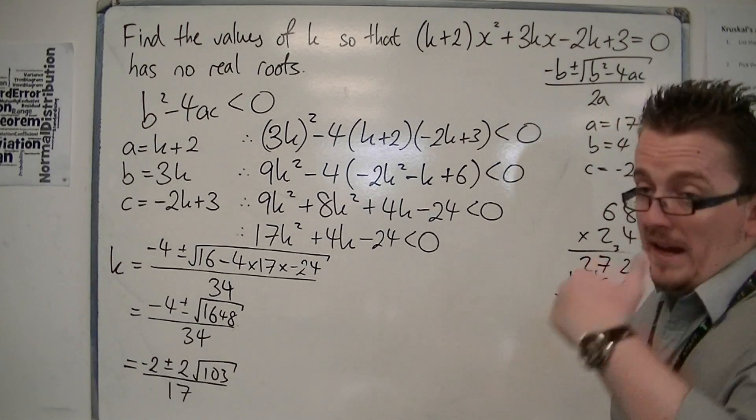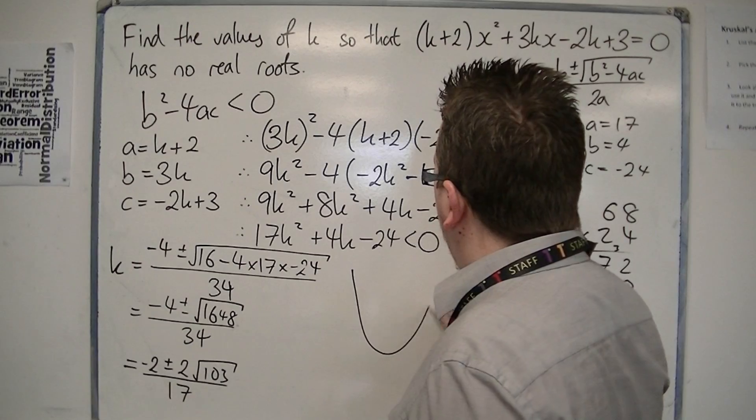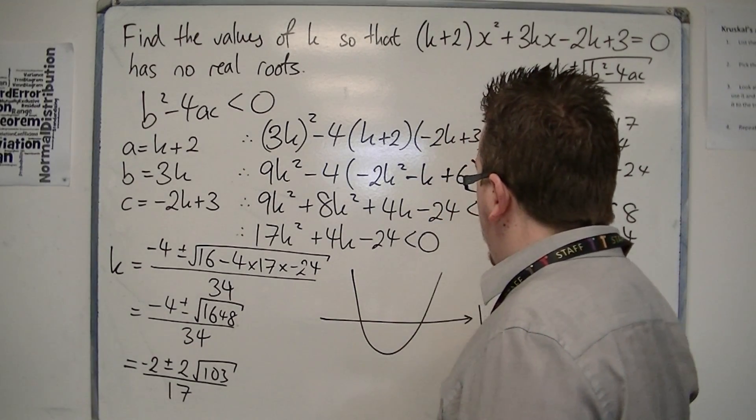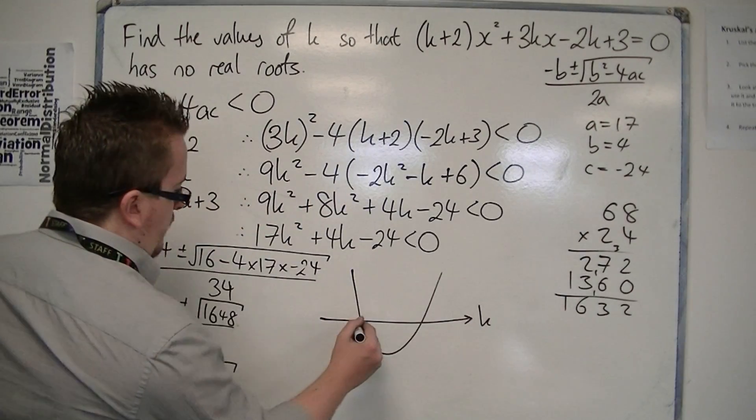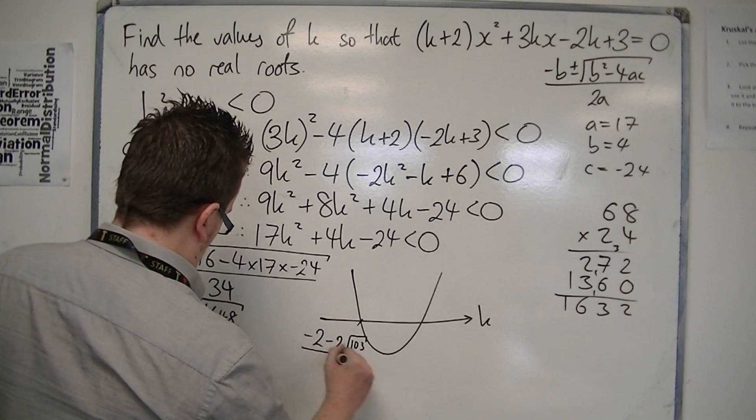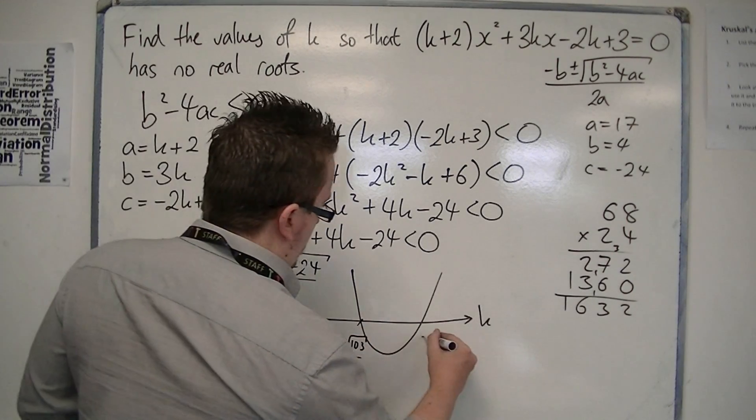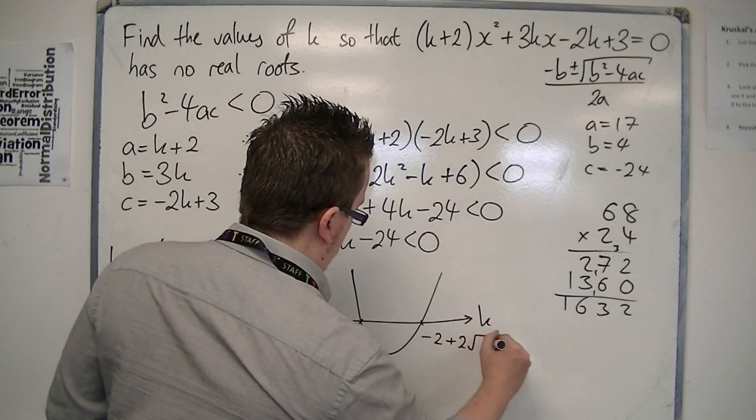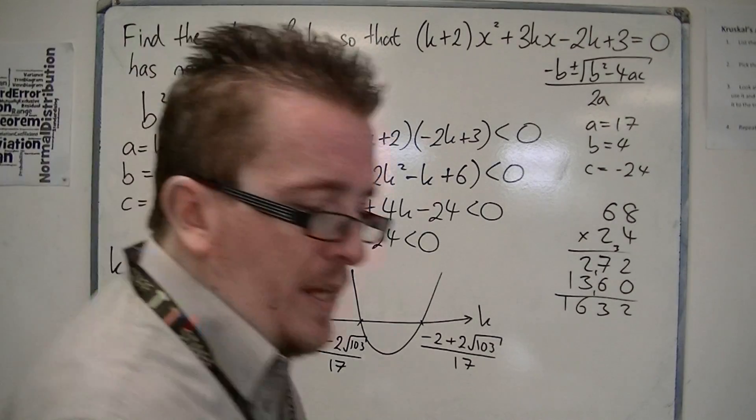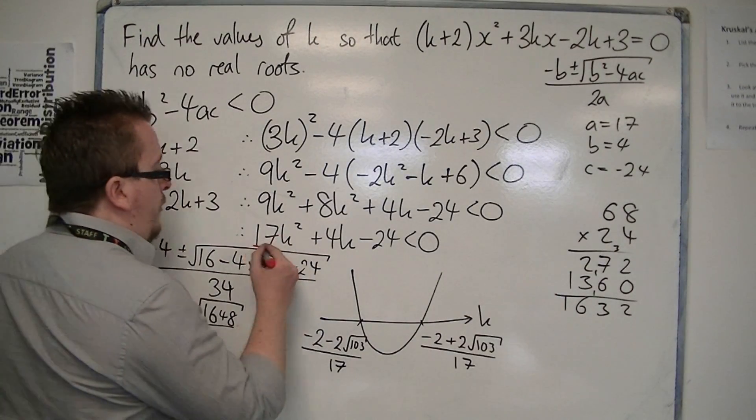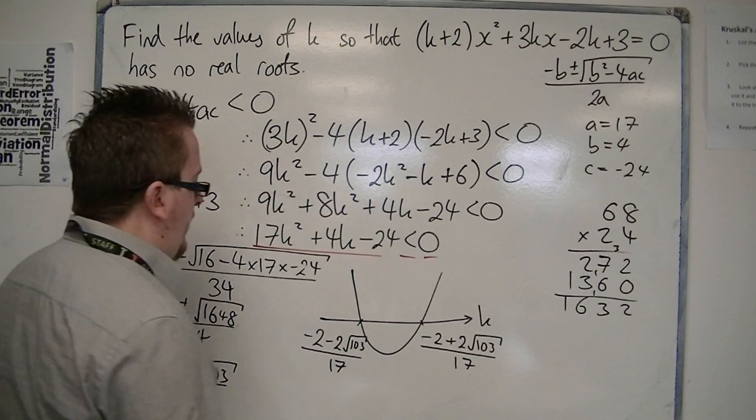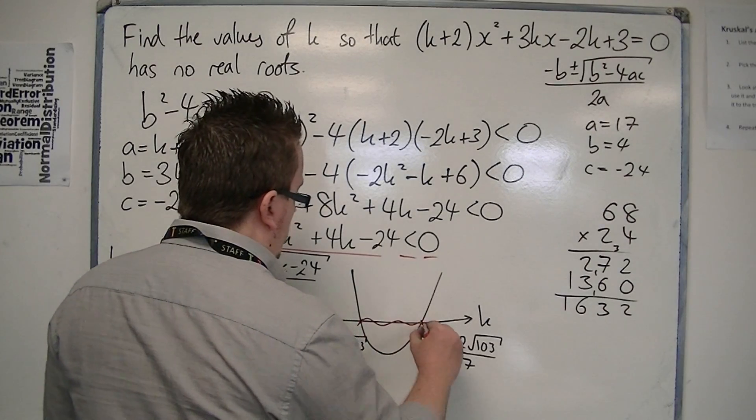So really the main bit here is that it is a positive parabola on the k-axis. It's got two solutions: we've got (-2 - 2√103)/17 and we've got (-2 + 2√103)/17. And because we want where is the parabola below the k-axis, it is between those two values.